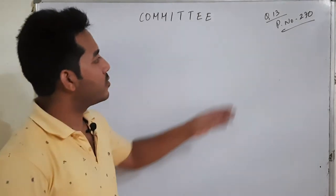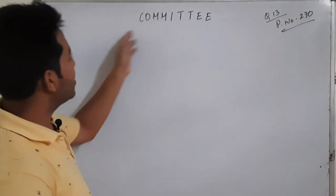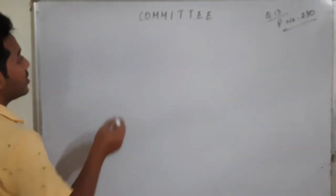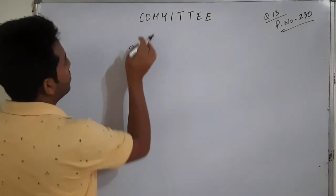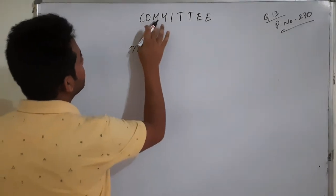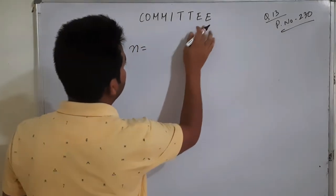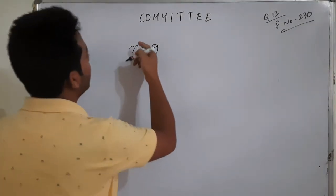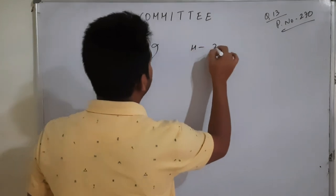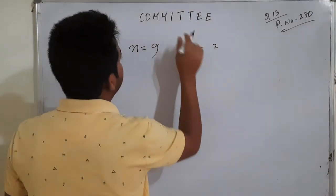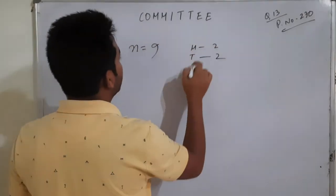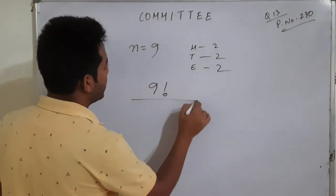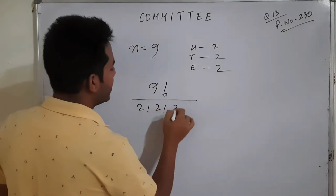Page number 230, question number 13 — we are given the word COMMITTEE. How many words can be formed? The letters are: 1, 2, 3, 4, 5, 6, 7, 8, 9 — nine letters. What are the repeats? C repeats, O repeats, M repeats, I repeats, T repeats, E repeats. So the formula is: n factorial divided by 2 factorial, 2 factorial, 2 factorial.